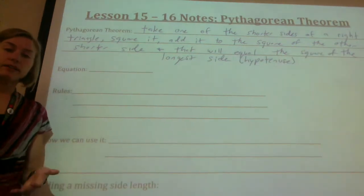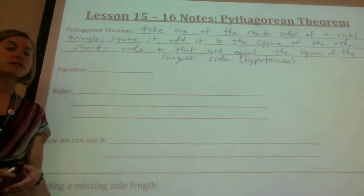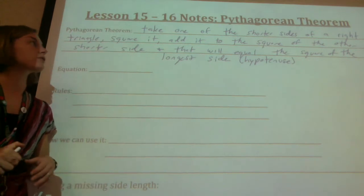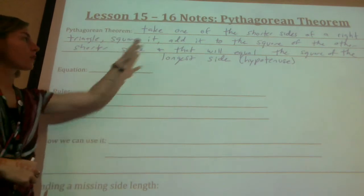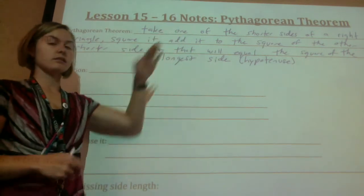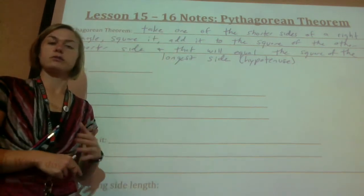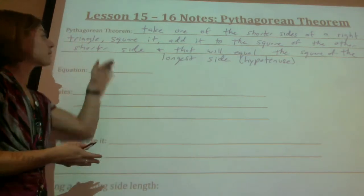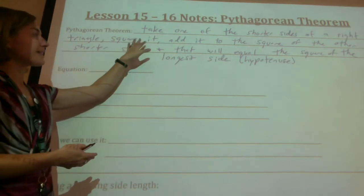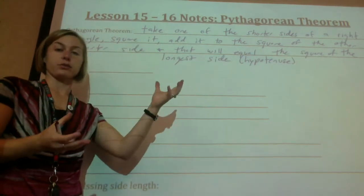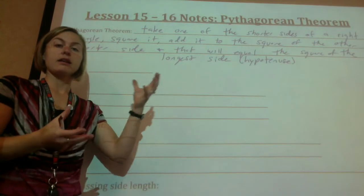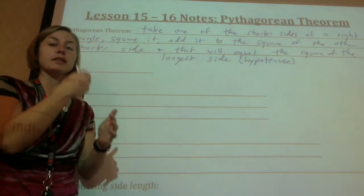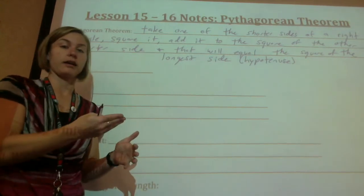The Pythagorean Theorem is a principle of all right triangles. Essentially, you can take one of the shorter sides of the right triangle — it doesn't matter which one — and square it. Then if you add it to the square of the other shorter side, they will together add up to be the square of the longer side.